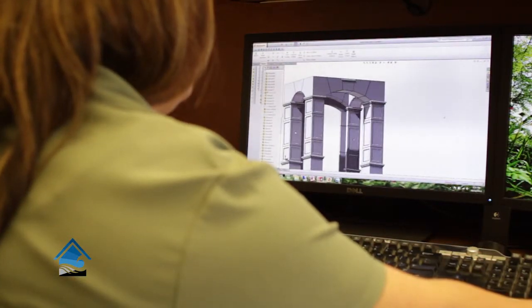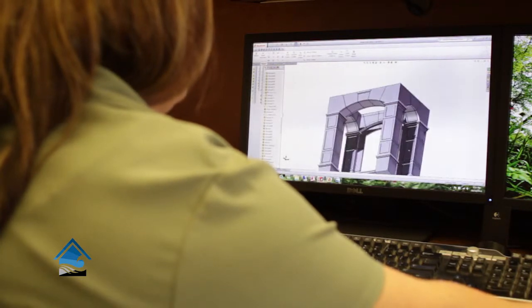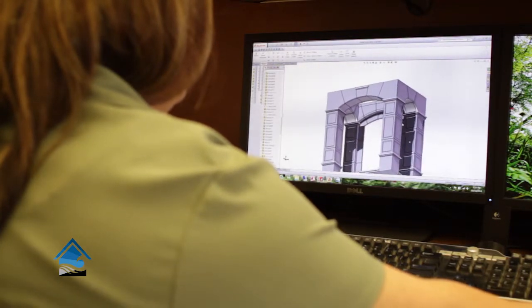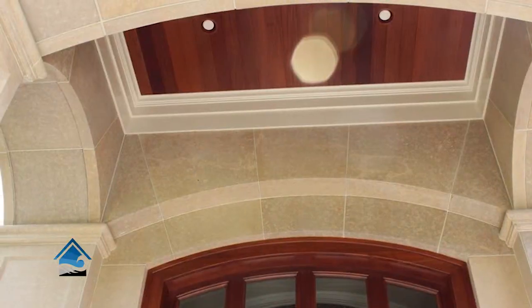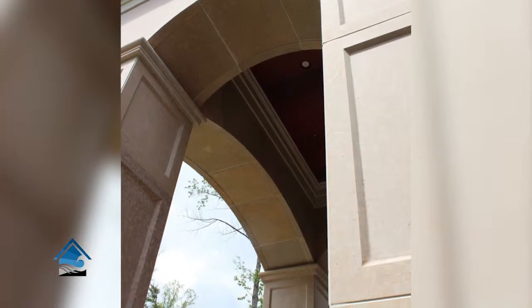So explain this particular project. This is a grand entryway? This is a front entry that we did. Very, very grand. There were over 120 pieces on this particular area of the project. We did the whole house, but this is just the front entry.